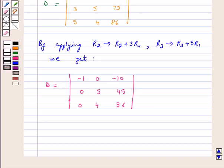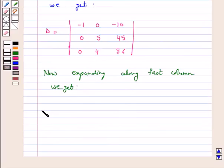Now, expanding along first column, we get delta is equal to minus 1 into R2.